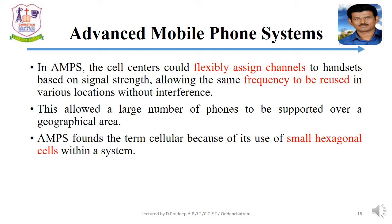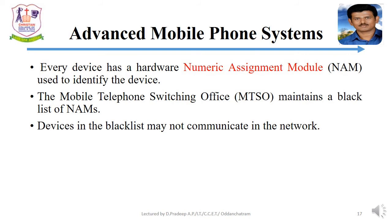This allowed a large number of phones to be supported over a geographical area. AMPS coined the term 'cellular' because of its use of small hexagonal cells within a system. Every device has a hardware Numeric Assignment Module (NAM) used to identify the device. The Mobile Telephone Switching Office maintains a block list of NAMs; devices in the block list may not communicate on the network.